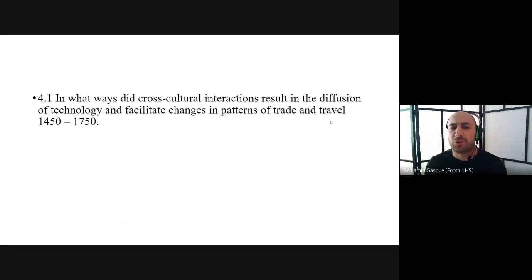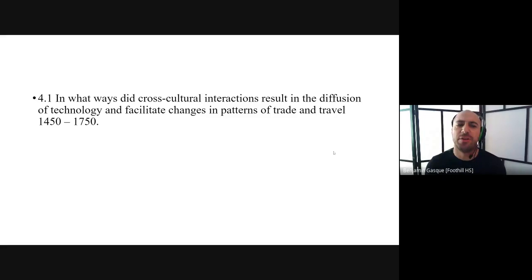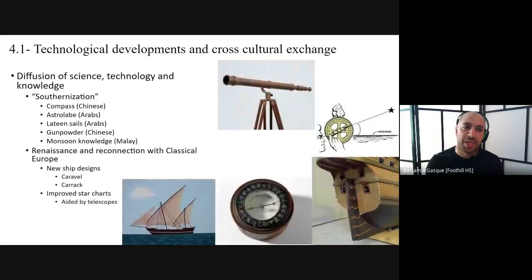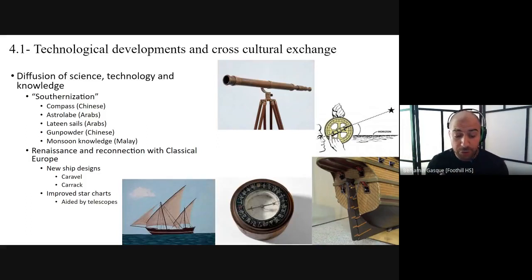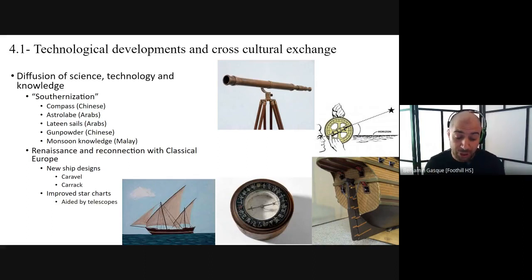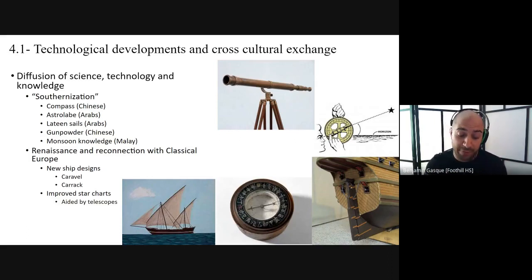So 4.1: in what ways did cross-cultural interactions result in the diffusion of technology and facilitate changes in patterns of trade and travel in the time period we're looking at, 1450 to 1750? To address that first part, the diffusion of several pieces of technology from outside Europe were essential to Europe being able to start to engage in global exploration and these oceanic voyages.